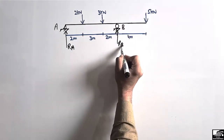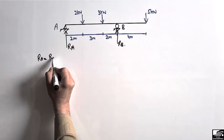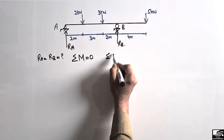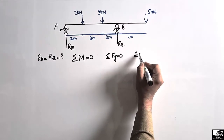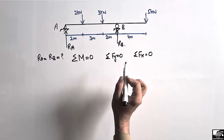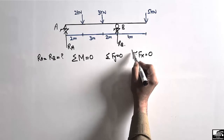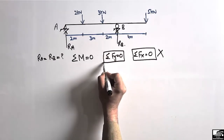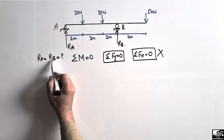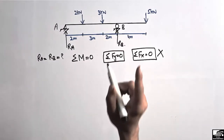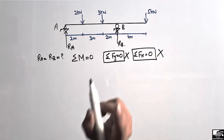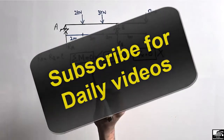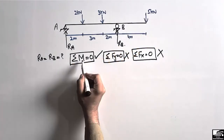Since there is no horizontal load, we will not consider any horizontal reaction. RB is the reaction at support B. To find RA and RB, we will use the equilibrium equations. We have three equilibrium equations: ΣM = 0, ΣFy = 0, and ΣFx = 0. We cannot use ΣFx because there is no horizontal load, and we cannot use ΣFy directly because we have two unknowns. The equation that can be used when we have two unknowns is the moment equation.